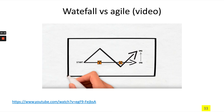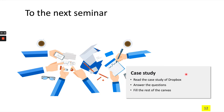There is a video I found for you — play it at home — that explains waterfall against agile. I think it's super interesting. For the next seminar, which is next week, I would like you to read the case study of Dropbox, answer the questions in that case study, and fill in the rest of the Lean Canvas. We will go through this homework in today's lecture and I will explain more.